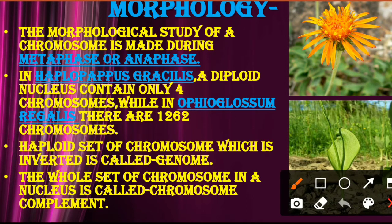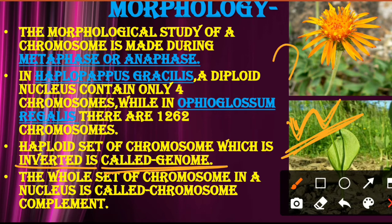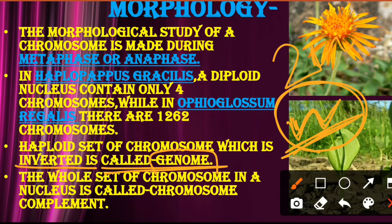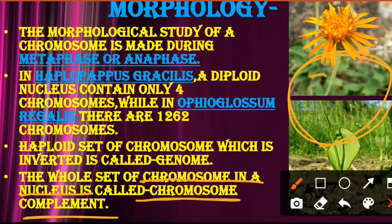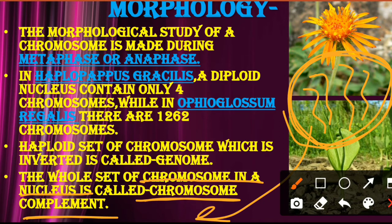Third point: the haploid set of chromosomes which is inherited is called the genome — meaning the entire genetic material present in chromosomes is collectively called the genome. Fourth point: the whole set of chromosomes in a nucleus is called the chromosome complement. The group of all chromosomes present inside a nucleus is called the chromosome complement.